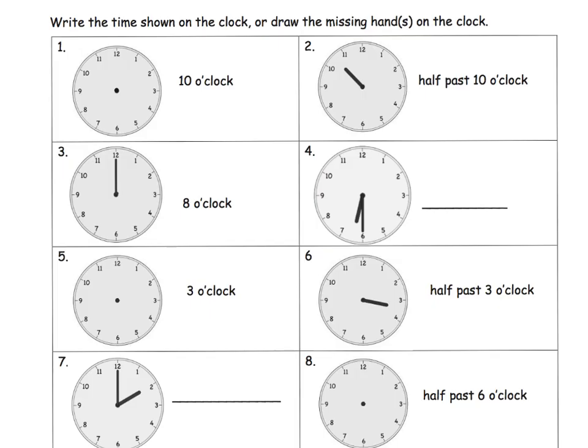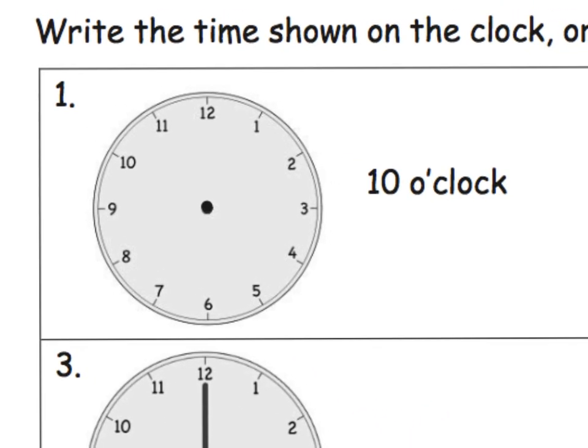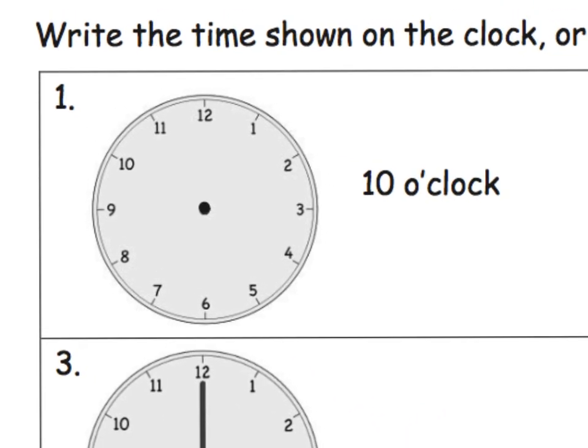So here, once they've got that, it's time to start practicing. So in this case, the directions say write the time shown on the clock or draw the missing hand. So sometimes they're going to tell the time. Sometimes they need to draw in the hands. So this first example, it says 10 o'clock. So we need to draw in the hands to reflect 10 o'clock.